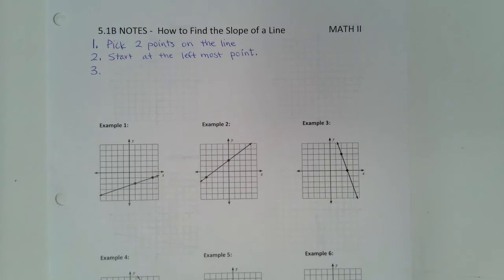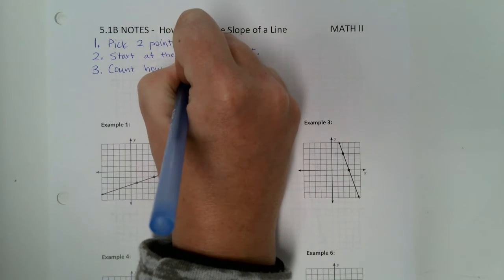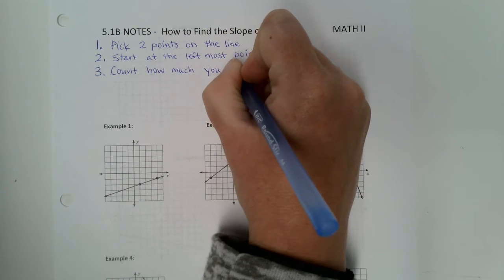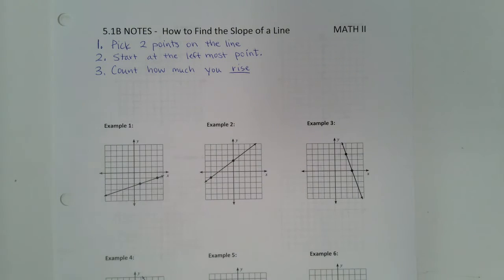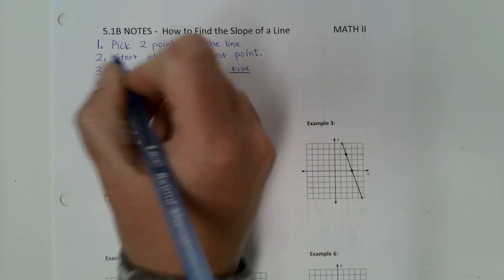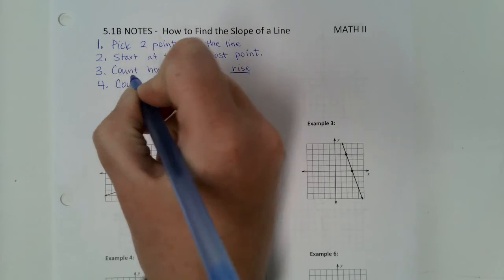Step three is where we actually have to do a little work. What you are going to do is you are going to count how much you rise. Now I said that's where it gets hard, but the hardest part is counting. So it's really not that hard — can we count? All right, so you're going to count how much you rise. Step four: you're going to count how much you run. I'll pause after this one so you can catch up.